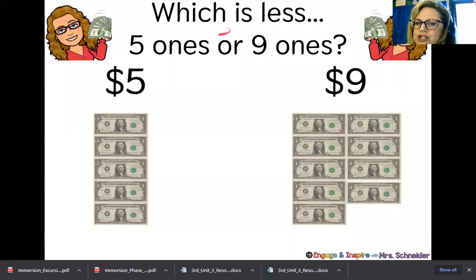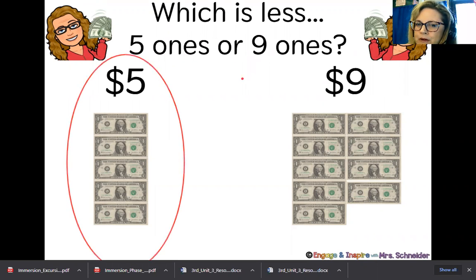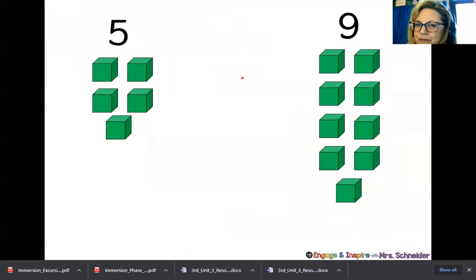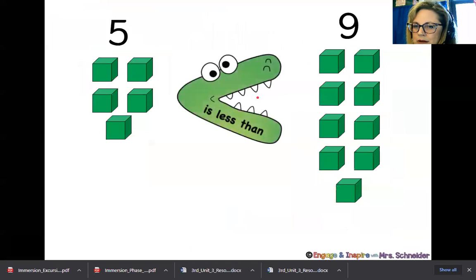So which is less? Five ones or nine ones? Five ones, right? So which is less here? Five ones or nine ones? And five ones are less. So the alligator opens his mouth to bite towards the bigger piece. So this is kind of a refresher from second grade. The symbol will face towards the bigger bite.